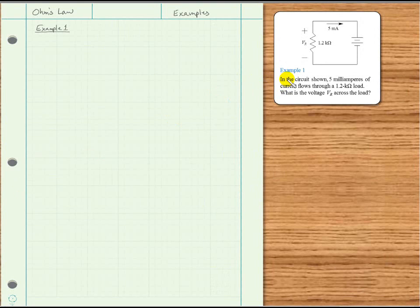Here's an example. In the circuit shown, 5 milliamps of current flows through a 1.2 kilohm load. What is the voltage across the load? And we're calling that voltage V sub R, the voltage across the load.